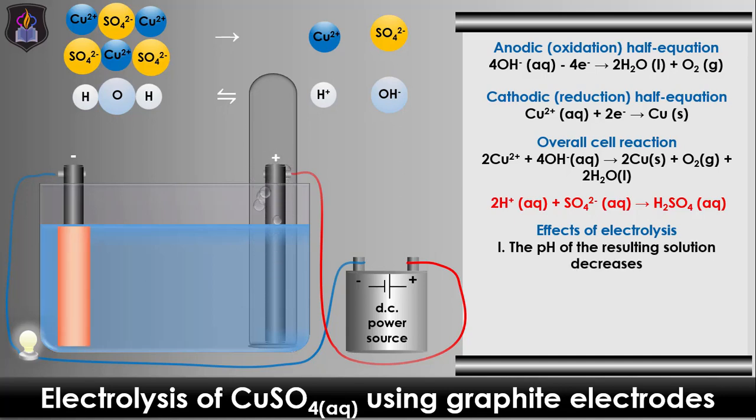Also, the gradual removal of the copper(II) ions from the solution as metallic copper causes the blue color of the electrolyte to fade gradually, since the presence of the copper(II) ions in solution is responsible for its blue color. And finally, the deposition of the metallic copper at the cathode causes it to increase in size and mass.